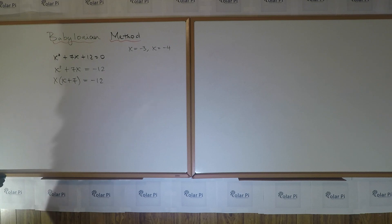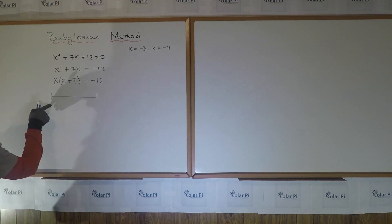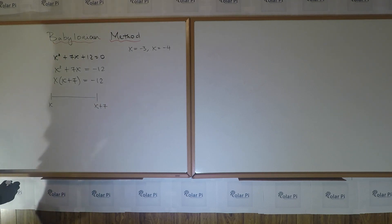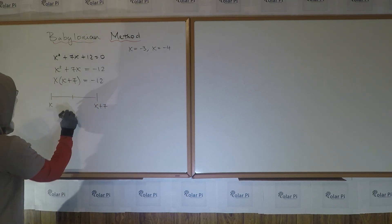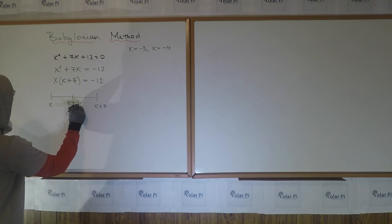And after this, the Babylonian method will have us draw a number line where we put on the left end the smaller of these two factors. That, in this case, is x, and so the other factor, the bigger factor, goes on the right. And then next, we figure out the midpoint of this number line. So that is the average of x and x + 7, and that's (x + 7)/2.